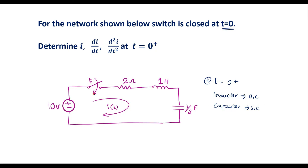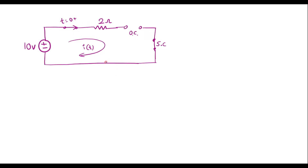Now, let me draw the equivalent circuit at t equal to 0 plus. This is the circuit at t equal to 0 plus. As shown, the inductor is open circuited and the capacitor is short circuited. Because of this open circuit, no current flows in the circuit. Therefore, at t equal to 0 plus, I of 0 plus is equal to 0.